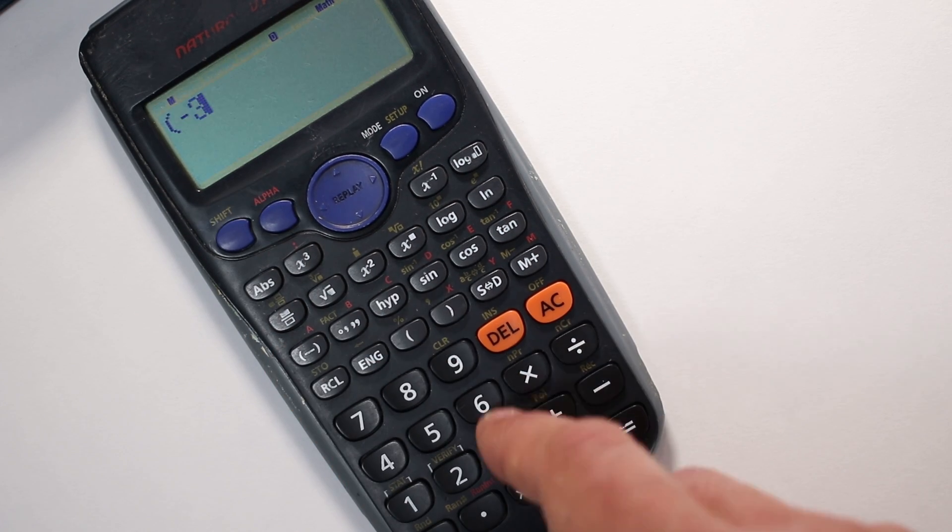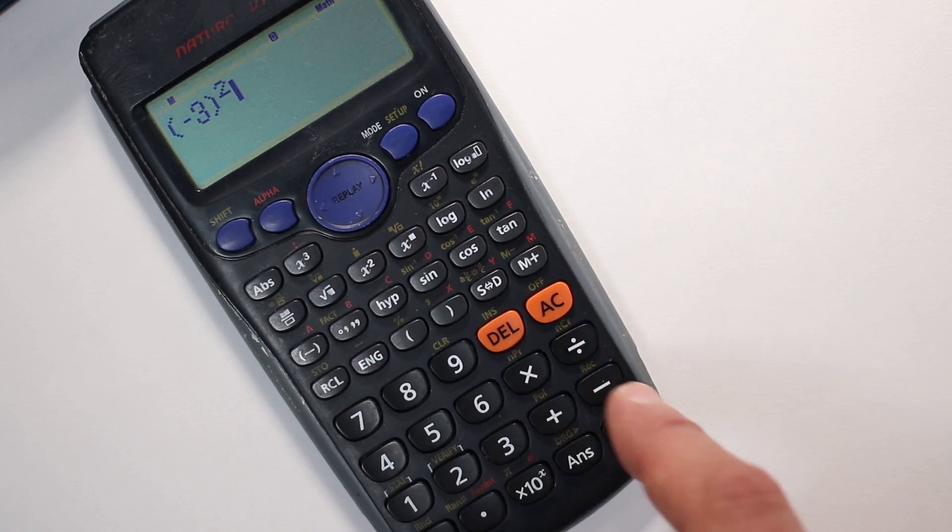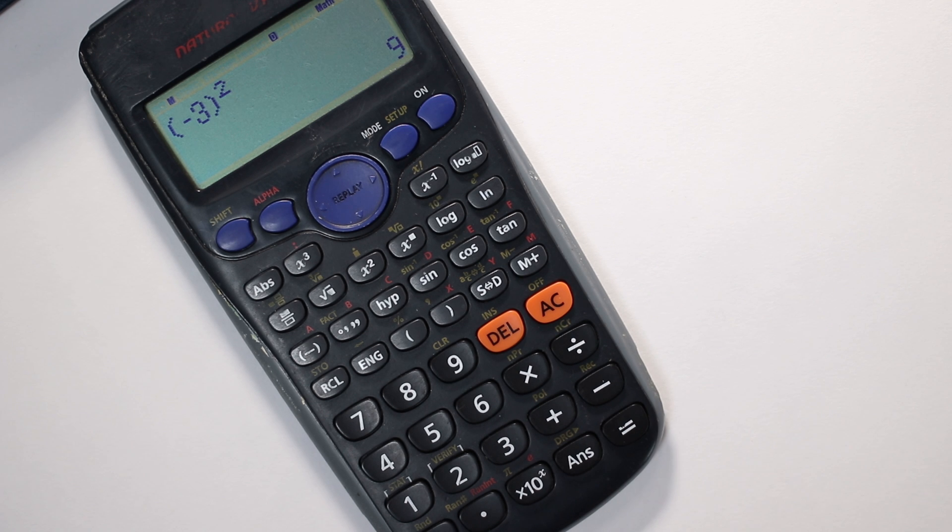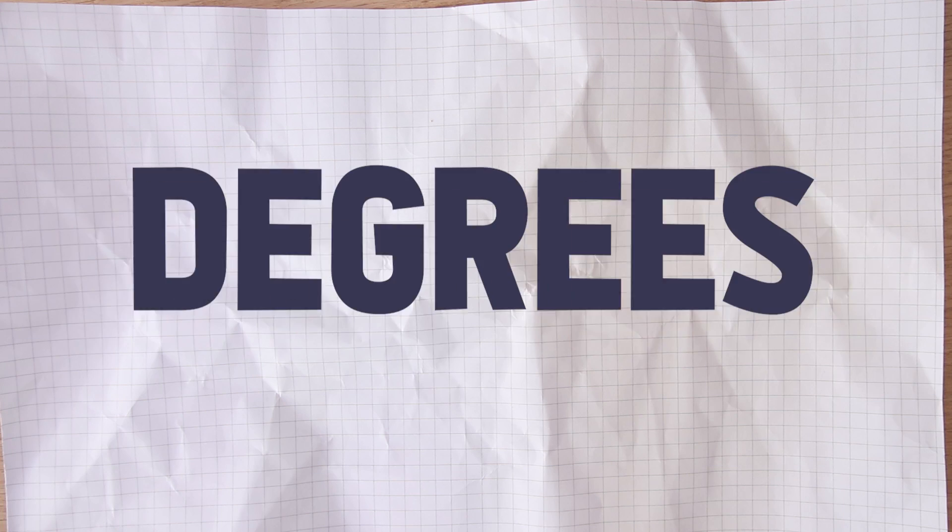So the way to get around this and to get your calculator to do it correctly is to put brackets around that negative 3. So negative 3 in brackets and then square it, and you can see that is giving us positive 9. When you are squaring a negative number, make sure you put it into brackets.